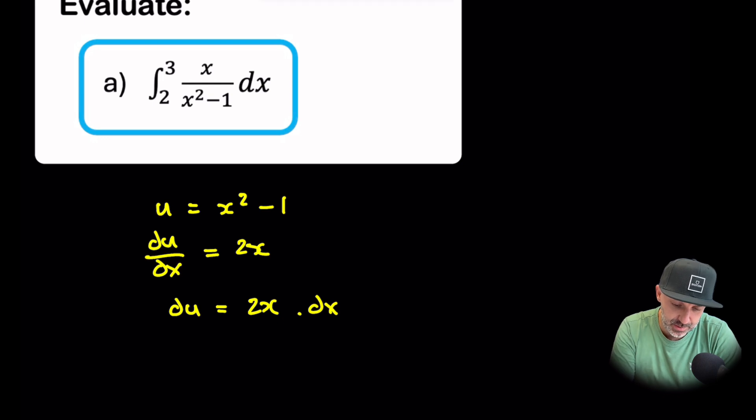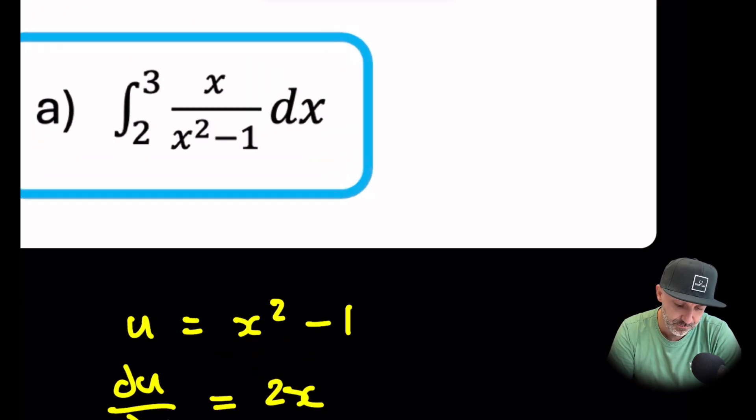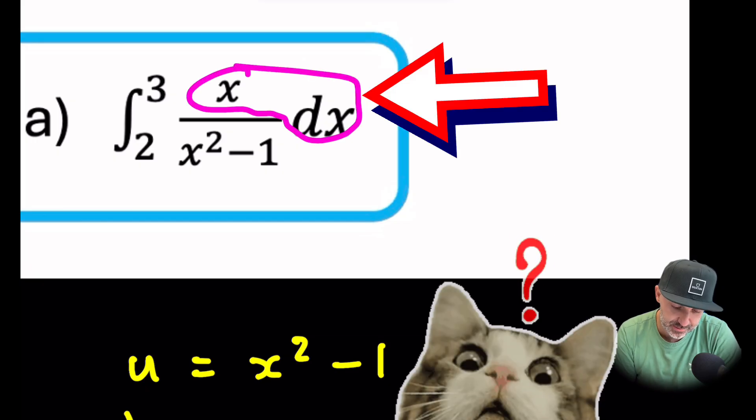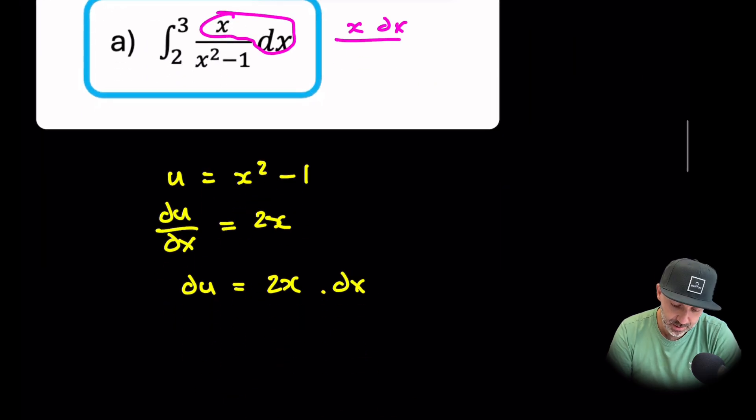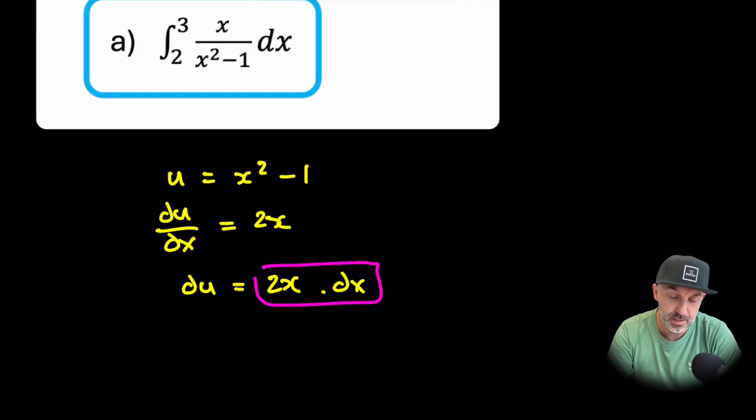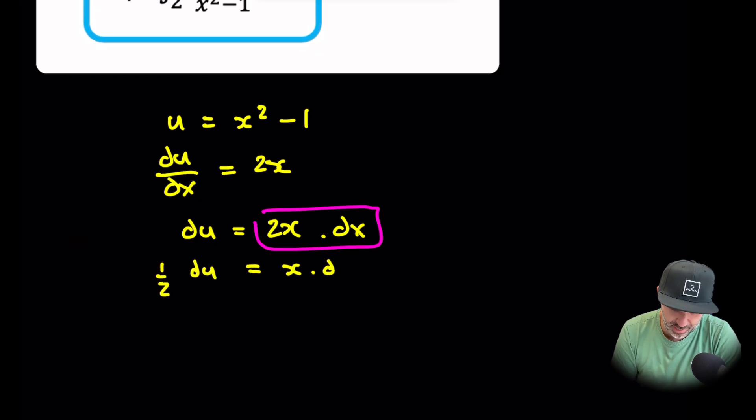Now I have almost exactly what is on the numerator. If you just go up and we have a look at this, we have x dx. Imagine that sort of being in a line. So we've got x dx in a line here. That is almost what we have here, but we've got 2x dx. Now we don't want 2x dx, so we're going to divide both sides by two, or times both sides by a half. So we have half du is equal to x dx.